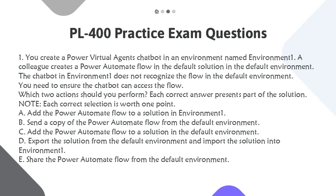Which two actions should you perform? Each correct answer presents part of the solution. Note: each correct selection is worth one point. A. Add the Power Automate flow to a solution in Environment 1. B. Send a copy of the Power Automate flow from the default environment. C. Add the Power Automate flow to a solution in the default environment. D. Export the solution from the default environment and import the solution into Environment 1. E. Share the Power Automate flow from the default environment.